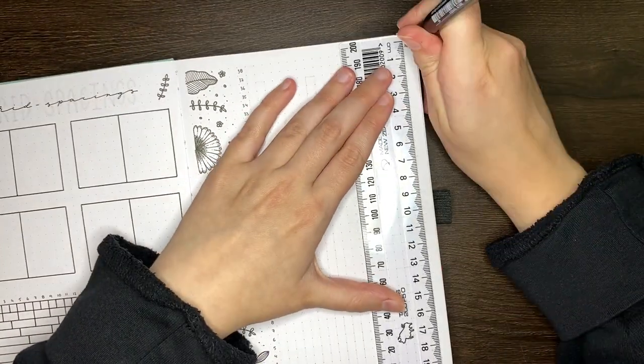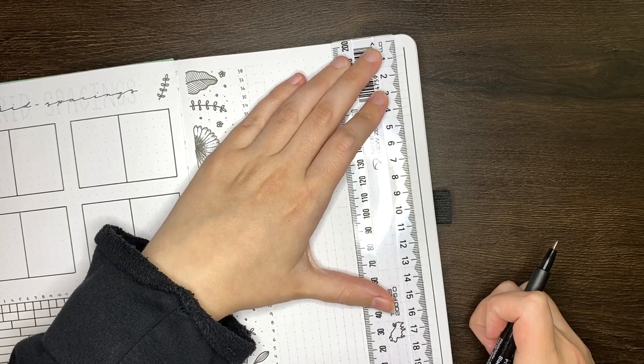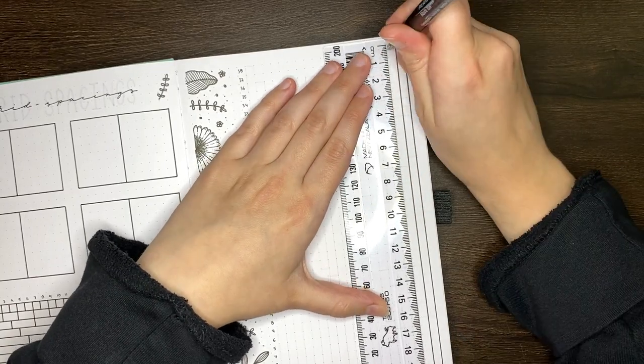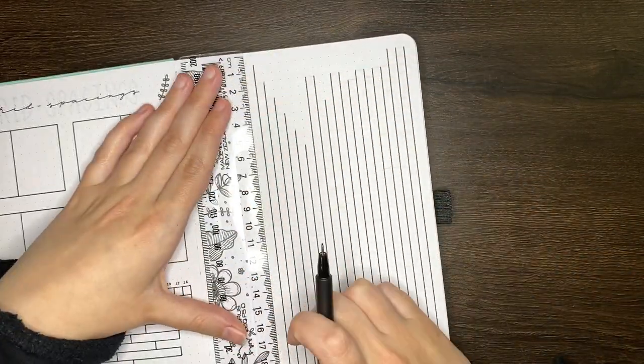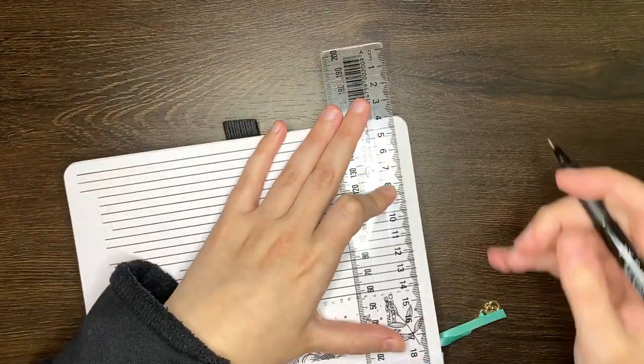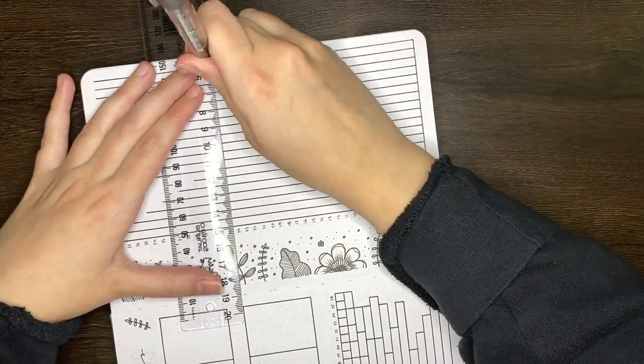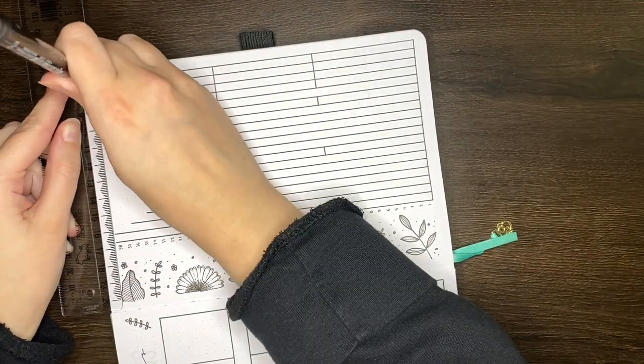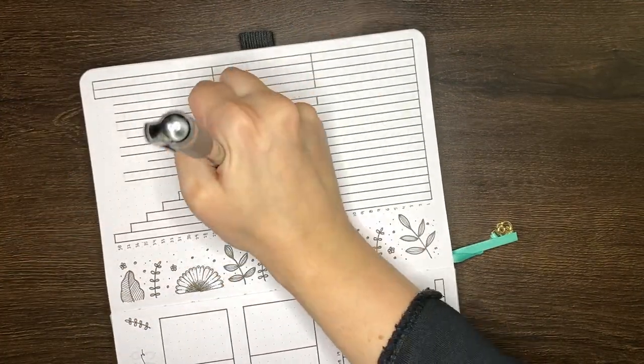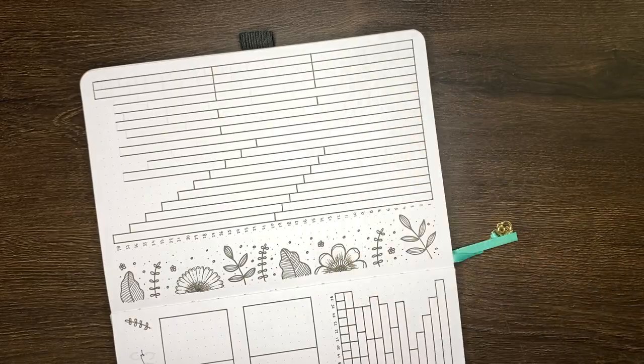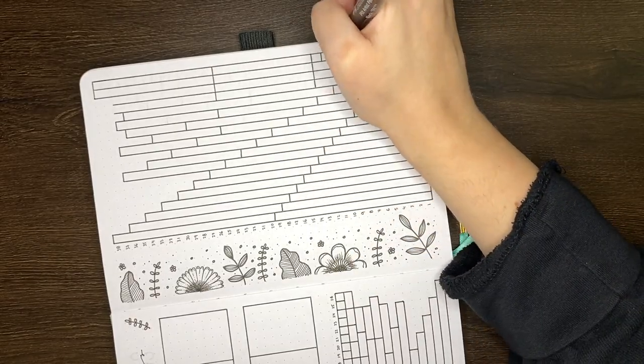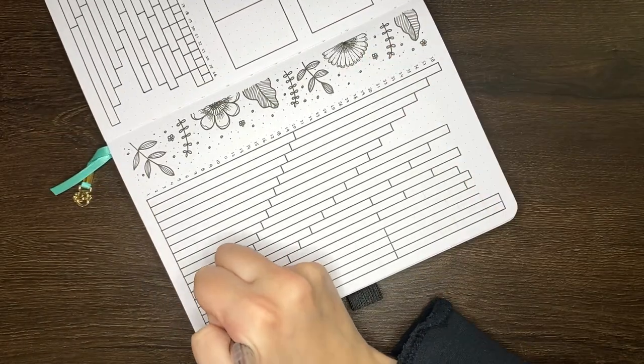The nice part about that style is that sometimes you don't want to perfectly divide a page into halves, thirds, etc. Sometimes you might want some extra space for a header or a quote or some kind of decoration. This style of grid spacing reference allows you to see that more easily I feel and without filling an entire page with lines which can be a little less user-friendly.